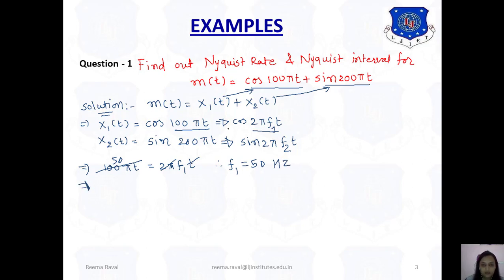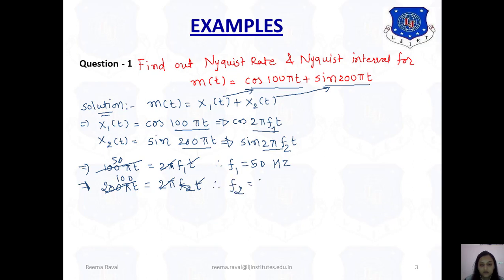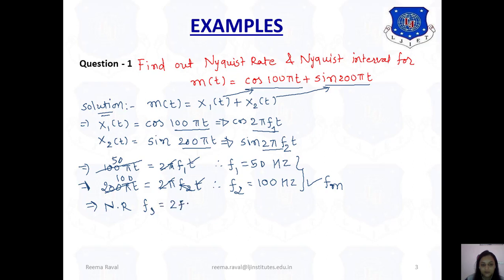From the two frequency values F1 = 50 Hz and F2 = 100 Hz, the maximum frequency is F2 = 100 Hz, so Fm = 100 Hz. Therefore the Nyquist rate Fs = 2 × Fm = 2 × 100 = 200 Hz. And the Nyquist interval Ts = 1/Fs = 1/200 = 0.005 seconds.